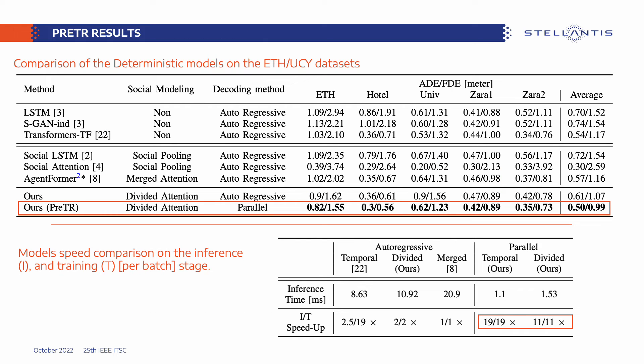We evaluated the models on the ETH-UCY benchmark using Average Displacement Error and Final Displacement Error as metrics, comparing with LSTM-based baselines, the Transformer-TF model, and the AgentFormer model. Our PRATER model, using divided attention and parallel decoding, outperformed previous state-of-the-art models. Additionally, we tested the divided attention module with an autoregressive decoding strategy, which outperformed previous models on the FDE score, showing the advantage of the added inductive bias, and demonstrating that parallel decoding benefits not only complexity reduction but also prediction accuracy.